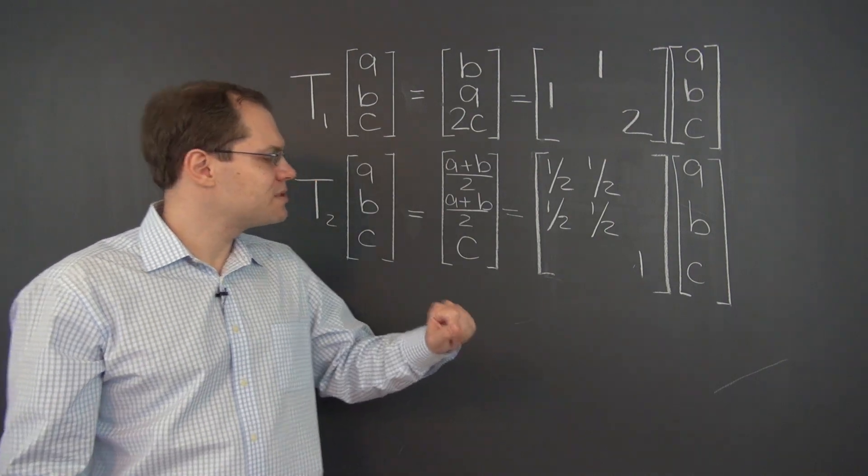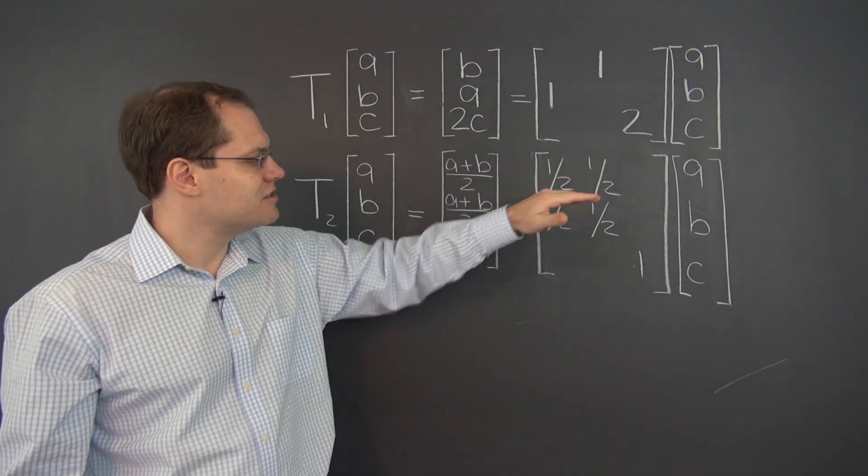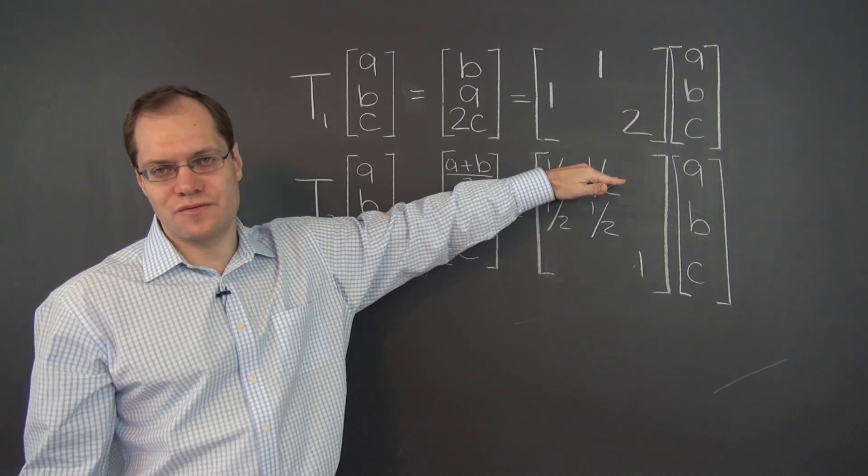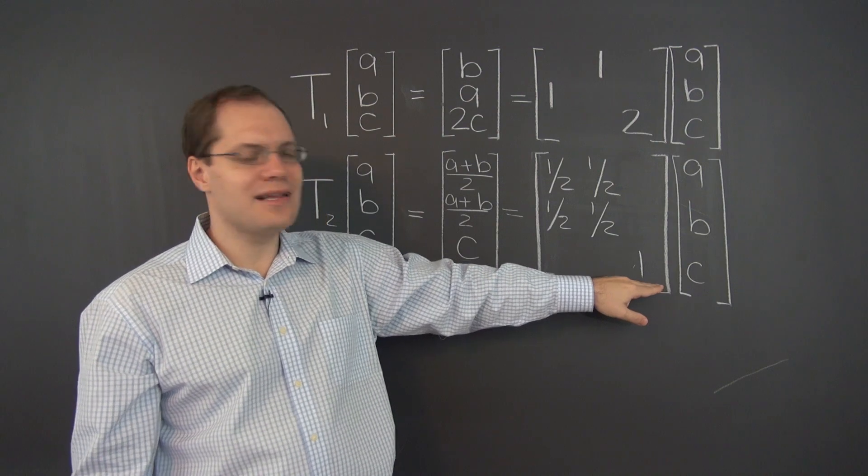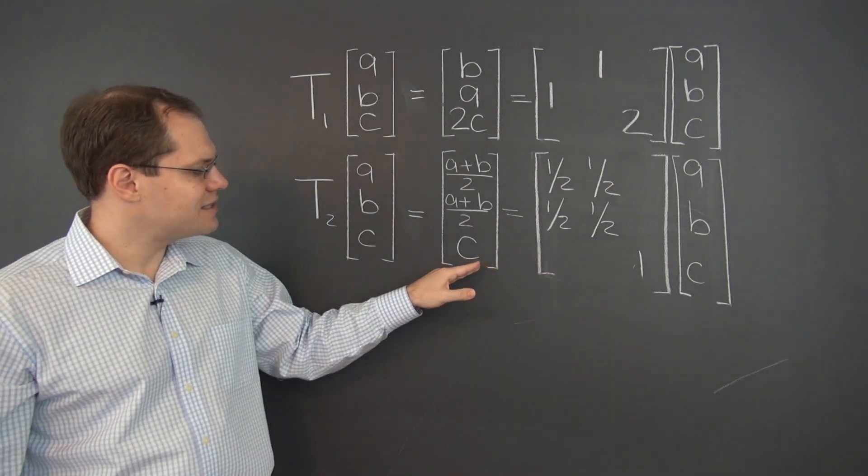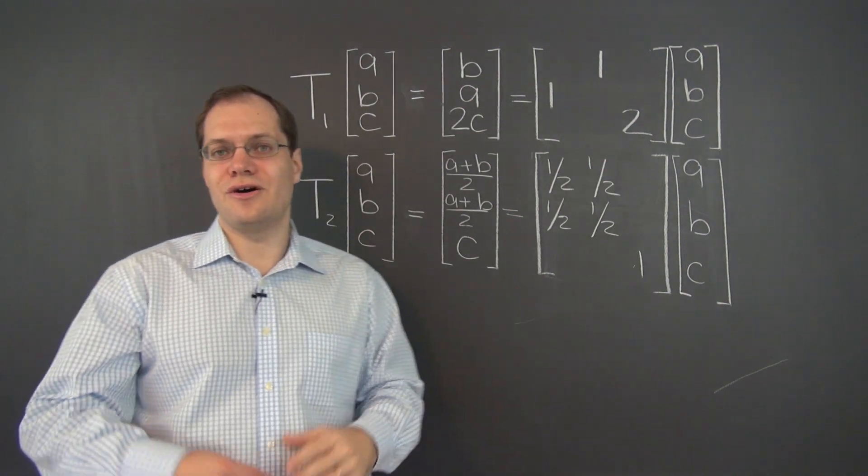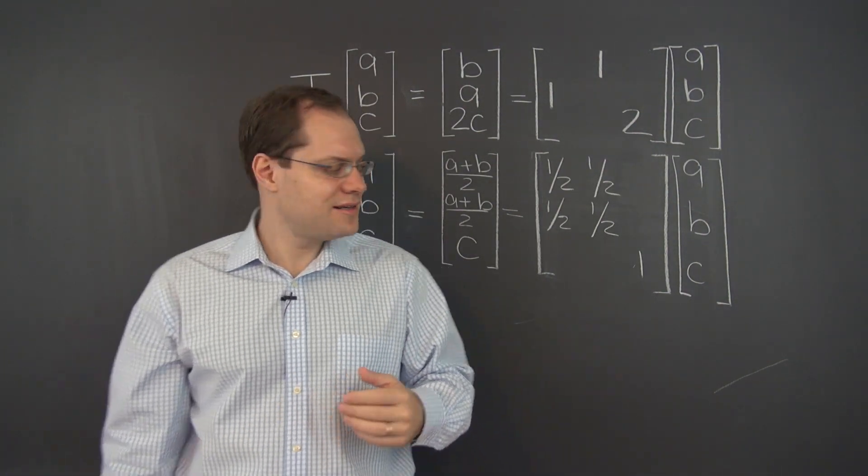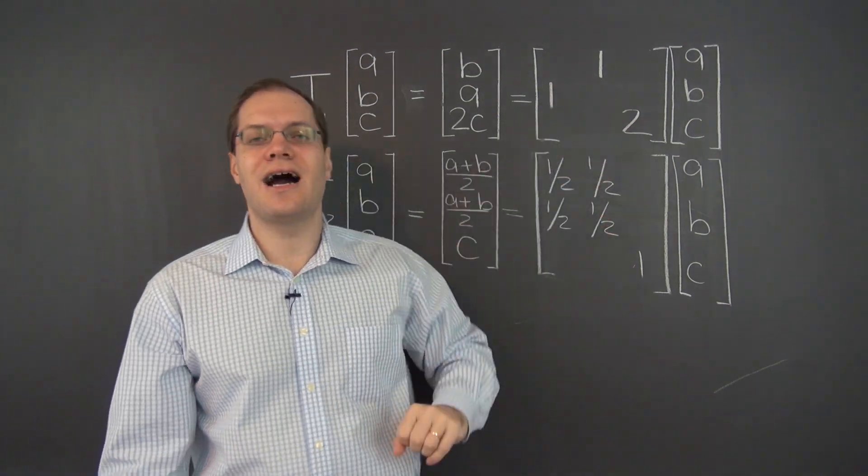This one's not elementary, perhaps, but we can still give it an action interpretation. This one is the averager of the first two rows. And so is this one. And this one leaves the last row unchanged. And that's exactly what we're seeing here. So these two transformations, as well as all other linear transformations in R^n, can be, in fact, represented by a matrix product where the matrix is constant.